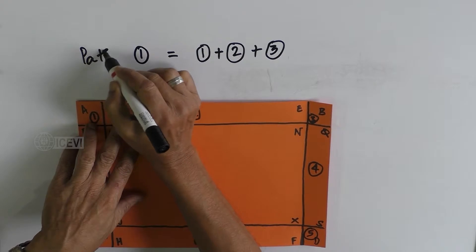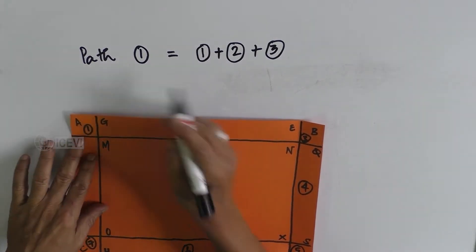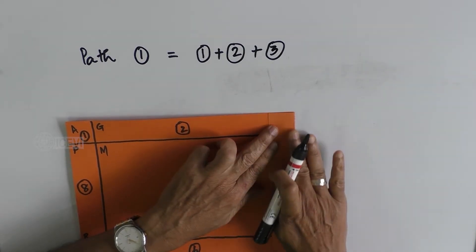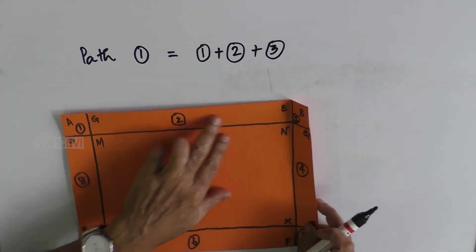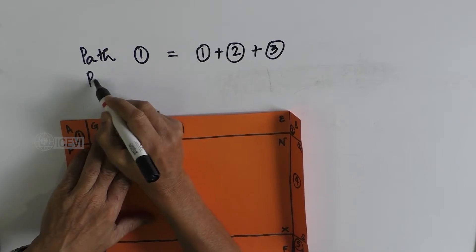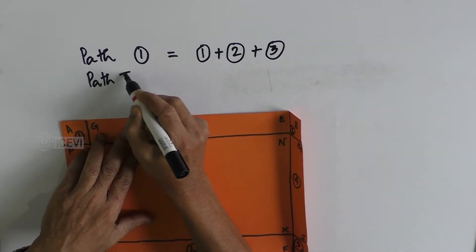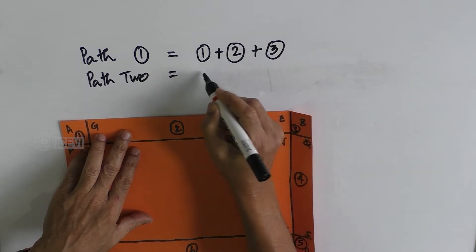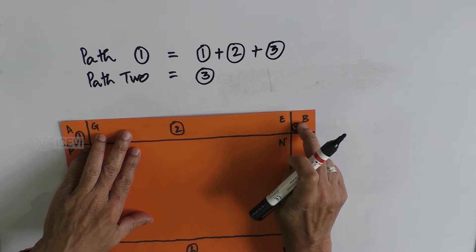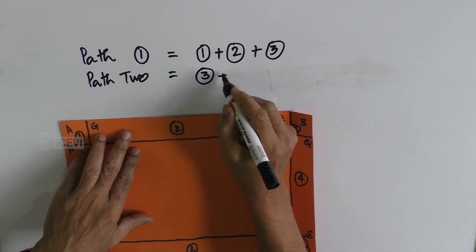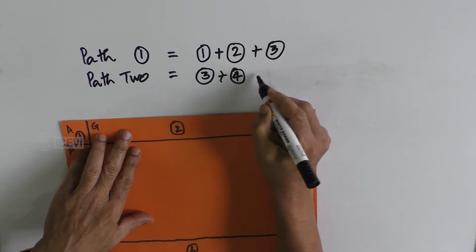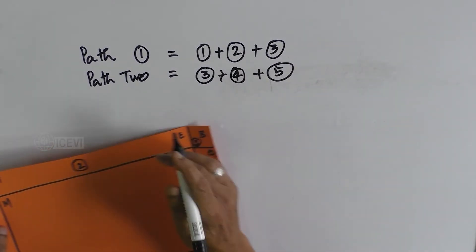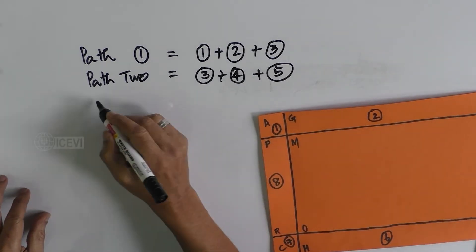Now the path two is the path on the right side of the field. Path two is nothing but the square three plus square four plus square five. Now let us take path three.